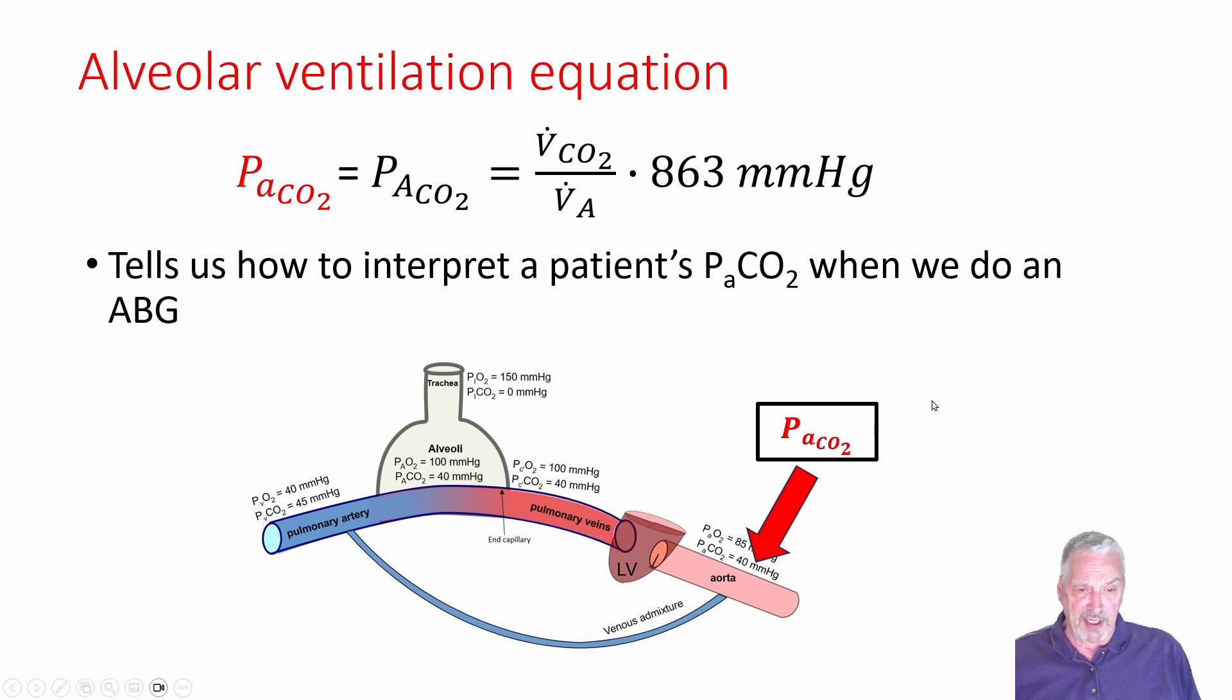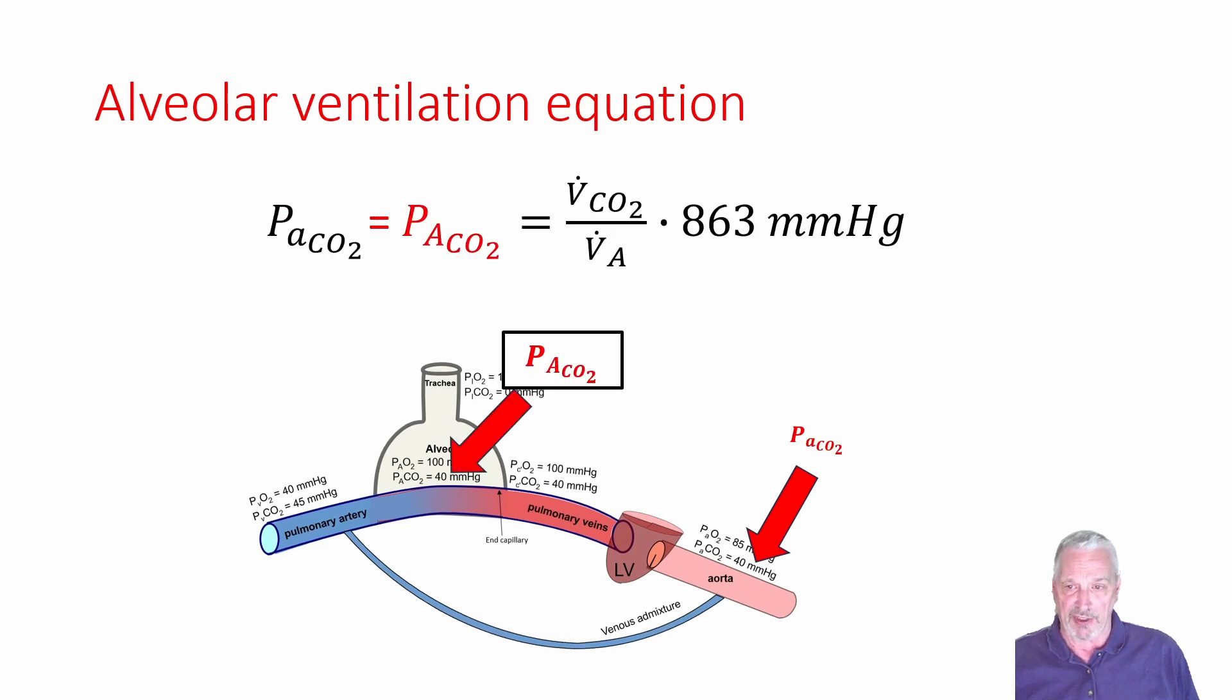From there, we want to go on and start to break things down one by one and talk a little bit more about the other factors in this equation. So P-big-A CO2 is equal to P-little-a CO2. Just to remind you, alveolar CO2, P-big-A CO2, is the partial pressure in the inspired air for the patient. Whereas P-little-a CO2 is the partial pressure in the large arteries, the blood of the large arteries or the aorta.